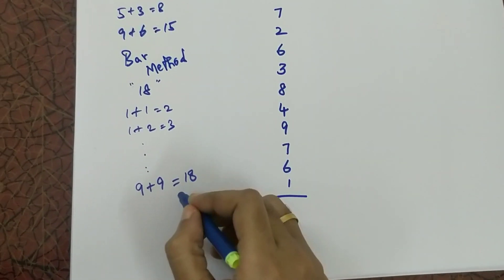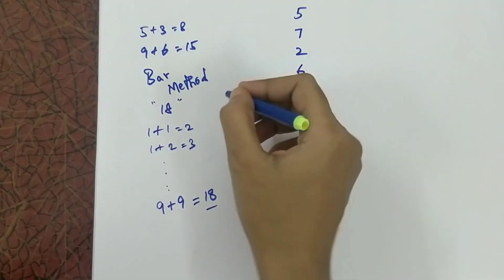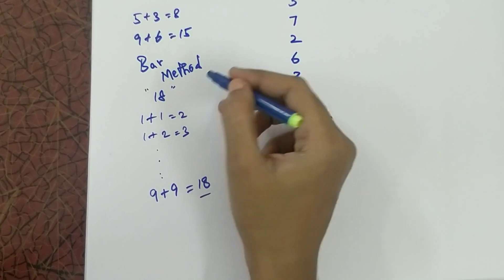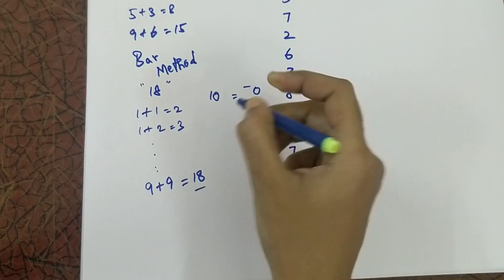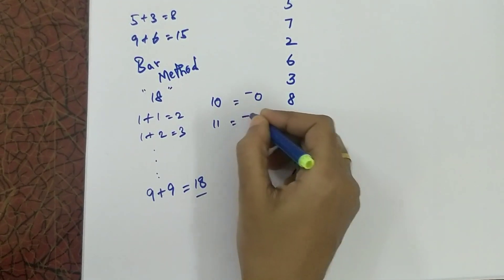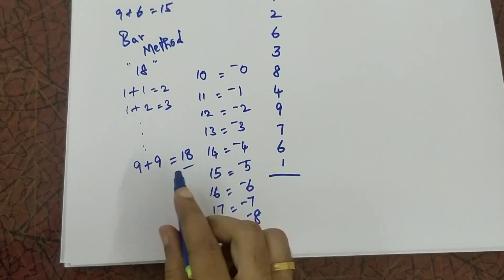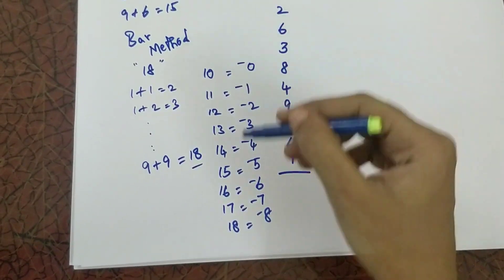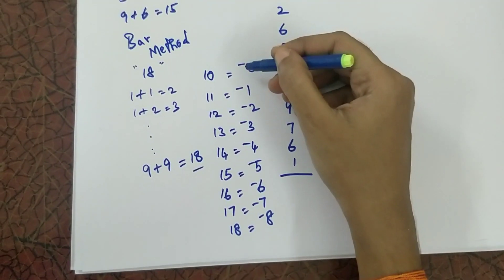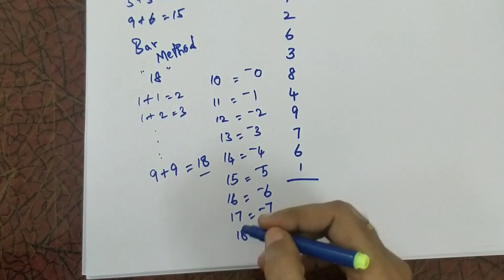So the maximum number you will get by adding two single digit numbers is 18. So for using bar method I am writing all the tens as bar 0. So I am writing from 10 to 18 and I am replacing all the tens with bar here. So this is bar method.